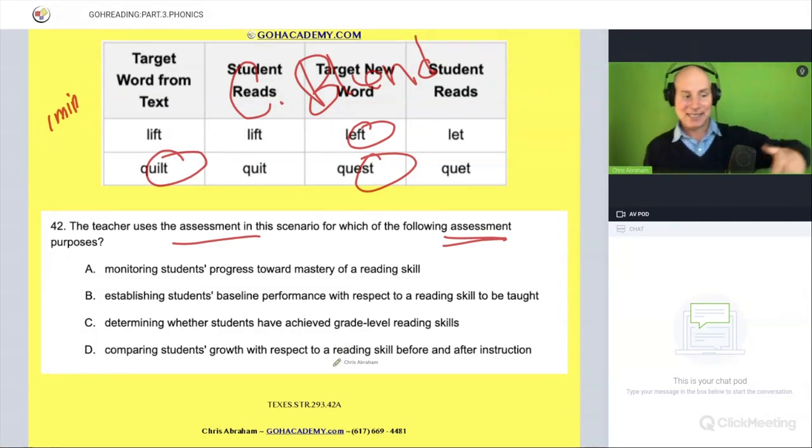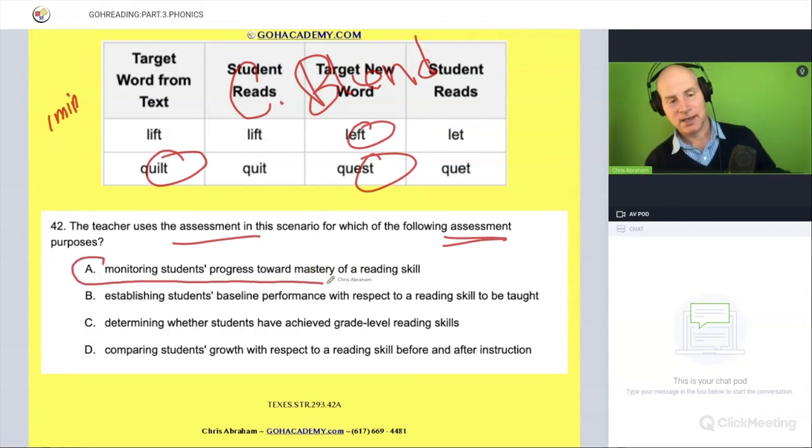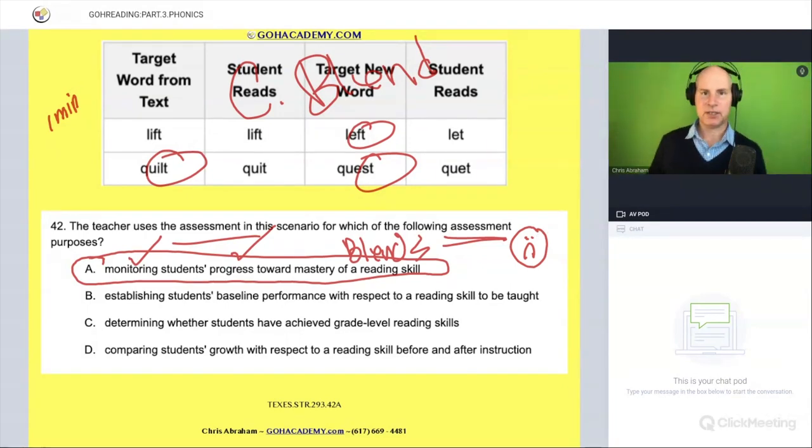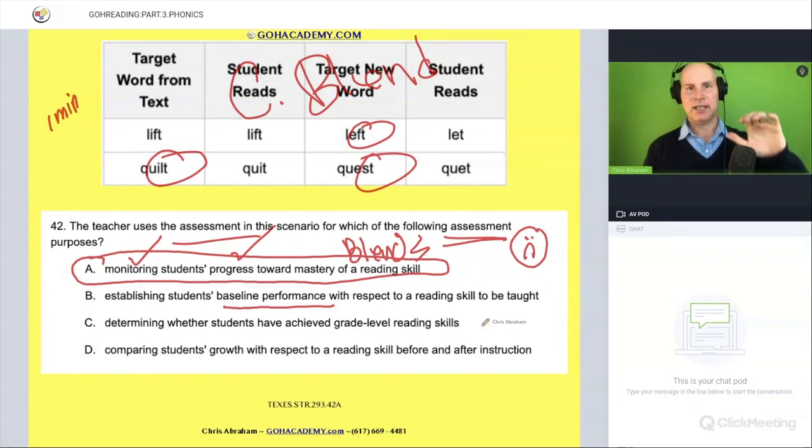Informal assessments are used to gather information about the student to plan lessons and instruction. Is it monitoring the student's progress towards mastery of a reading skill? That's actually the answer. In this assessment of pulling out those 10 words, the teacher is using this assessment to monitor their growth and to see if they're mastering a specific skill. In this case, they're testing to see if they have blends. And based on the assessment, it looks like not yet.